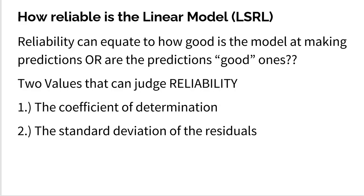Reliability can equate to how good the model is at making predictions. Are the predictions good ones? If you're trying to use a line to make predictions from your explanatory variable to your response variable, you want those predictions to be fairly accurate. How can we judge this? There are actually two values that can tell us very specifically how reliable our line is. If you're asked about reliability, you want to mention these two values.